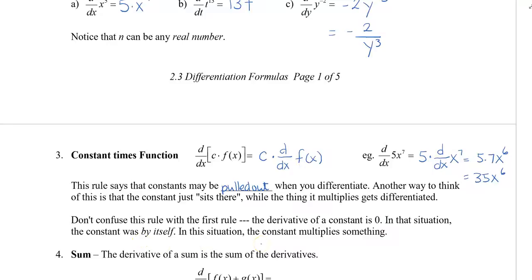So we can take little shortcuts. Instead of going 5 times 7 and then x to the 6, we can actually just go 5 times 7 and write 35x to the 6 right away. And that's okay.